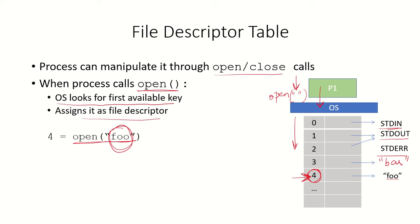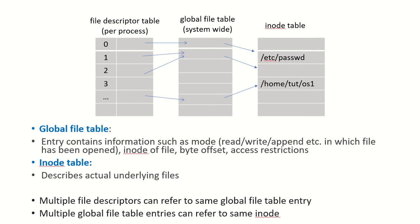The operating system assigns the first available key as the file descriptor. So if the process gives a command like open("foo"), the first available value in the file descriptor table — say, 4 — will be assigned to "foo" and returned to the process. The process then accesses the file only through this file descriptor. There is one file descriptor table per process, and one global file table maintained system-wide by the OS for all files and resources used by all processes.